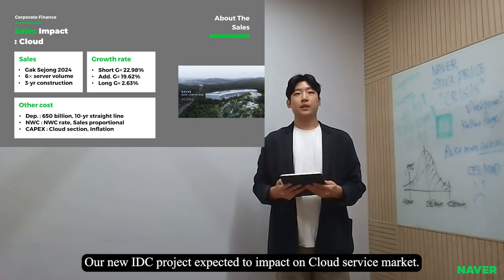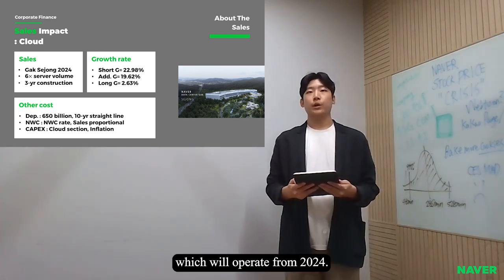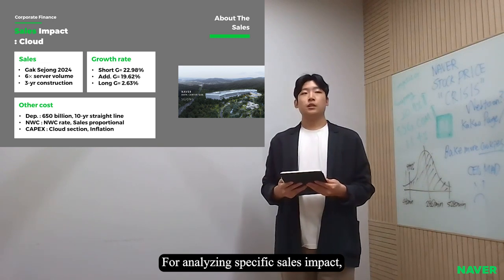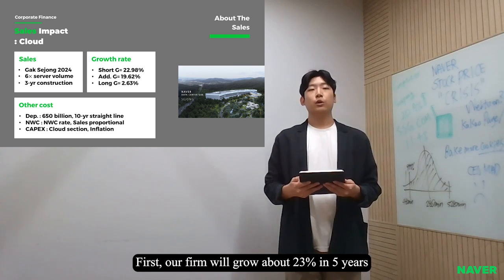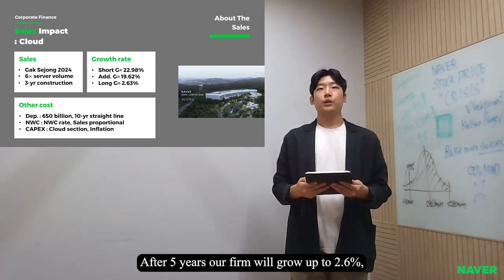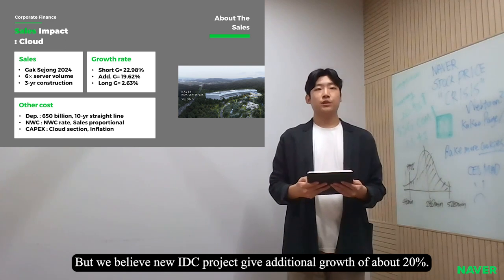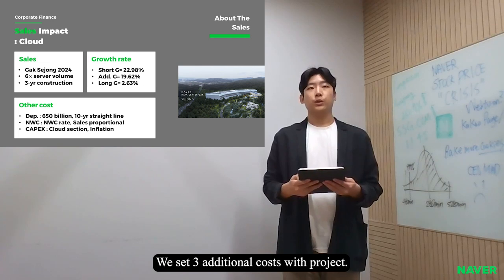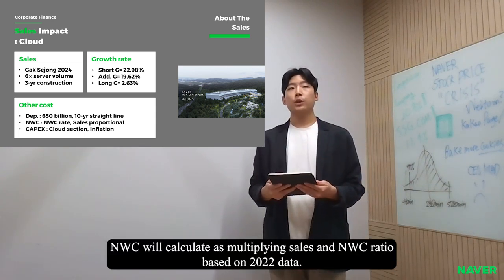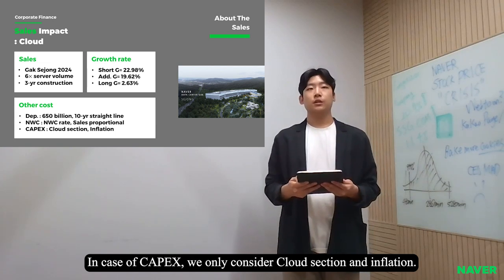Our new IDC project is expected to impact the cloud service market. We assume the new IDC has the same scale and sales impact as Gak Sejong, which will operate from 2024, and that the sales impact will occur after IDC construction. Our firm will grow about 23% in 5 years based on market research, and after 5 years, growth will slow to 2.6% due to computing market saturation. However, we believe the new IDC project gives additional growth of about 20%. We set three additional costs: depreciation costs calculated as a 10-year straight-line method on 650 billion won, networking capital calculated by multiplying sales and networking capital ratio based on 2022 data, and capex considering only the cloud section and inflation.